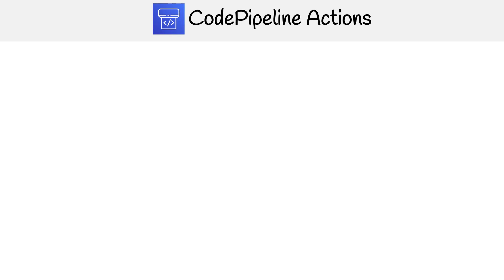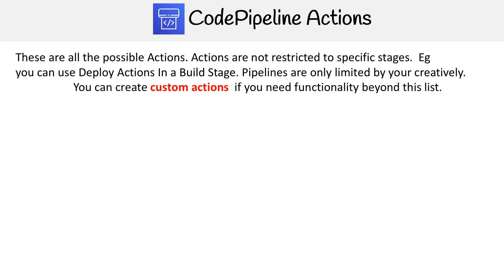In code pipeline, actions is where all the magic happens, and there are a lot of possible actions for you to take. Actions are not restricted to specific stages, so if you want to have a deploy action in your build stage, you can definitely do so. Pipelines are only limited by your creativity, and you can create custom actions if you need functionality beyond what's available. Let's get into the available actions.